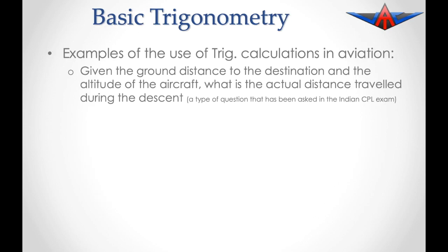A couple of examples of trig calculations in aviation would be: given the ground distance to the destination and the altitude of the aircraft, what's the actual distance travelled during the descent? This type of question has been asked in some international exams, or it could be a calculation of the distance travelled during a climb — not the horizontal distance, but the actual distance through the air.